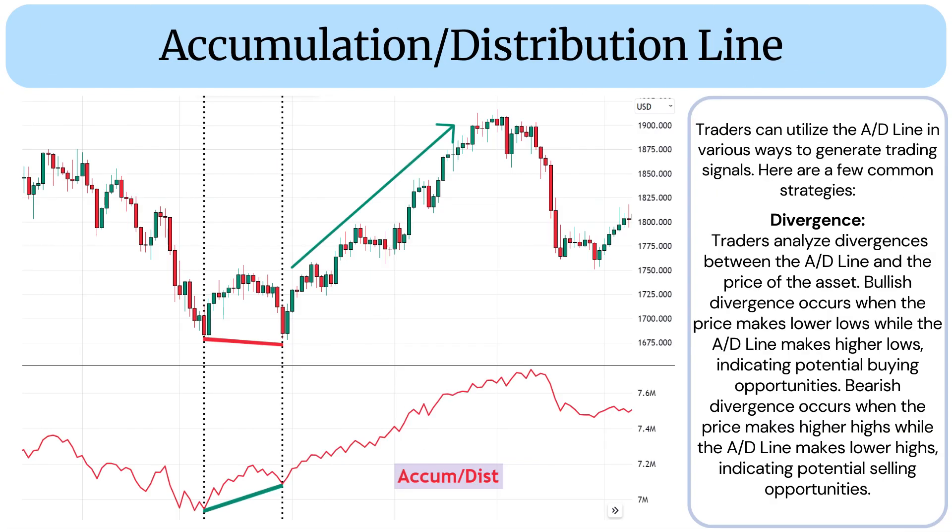Traders can utilize the AD line in various ways to generate trading signals. Here are a few common strategies. Divergence: Traders analyze divergences between the AD line and the price of the asset. Bullish divergence occurs when the price makes lower lows while the AD line makes higher lows, indicating potential selling opportunities.